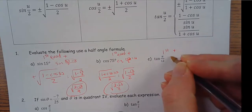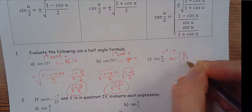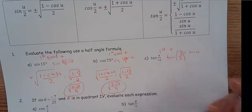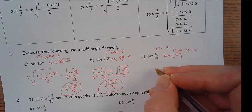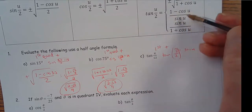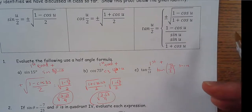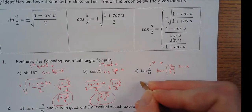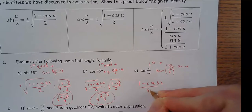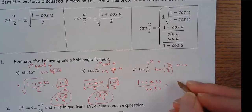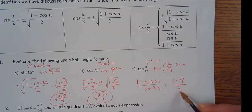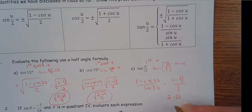For tangent of pi/12: think of it as tangent(pi/6 divided by 2), so u = pi/6, which equals 30 degrees. I'll convert to degrees — easier to work with. I'm going to use the formula (1 − cosine 30) / sine 30. That gives (1 − √3/2) / (1/2). Doubling everything to clear fractions: (2 − √3) / 1, so the answer is 2 − √3.